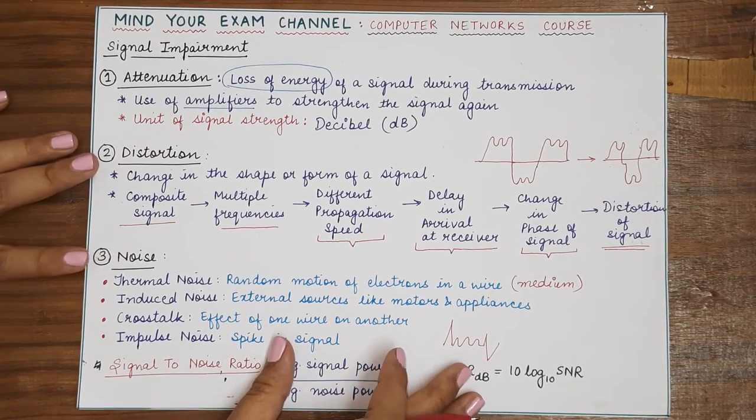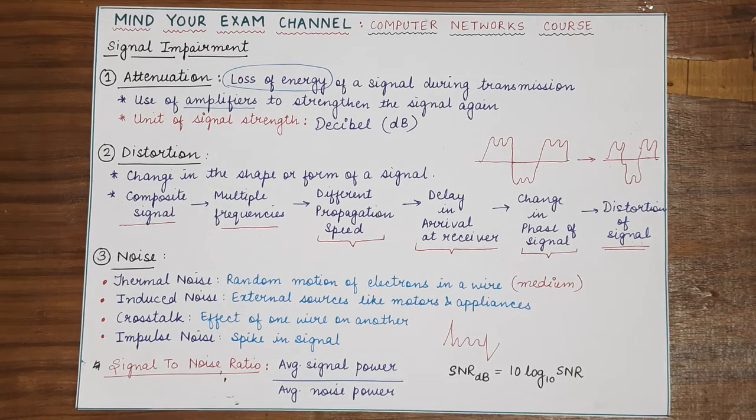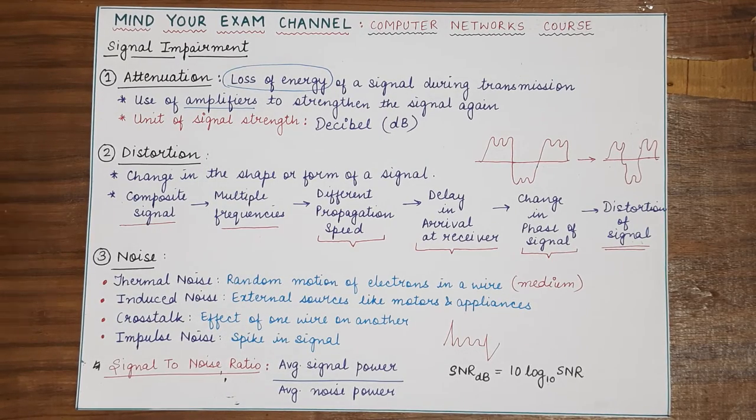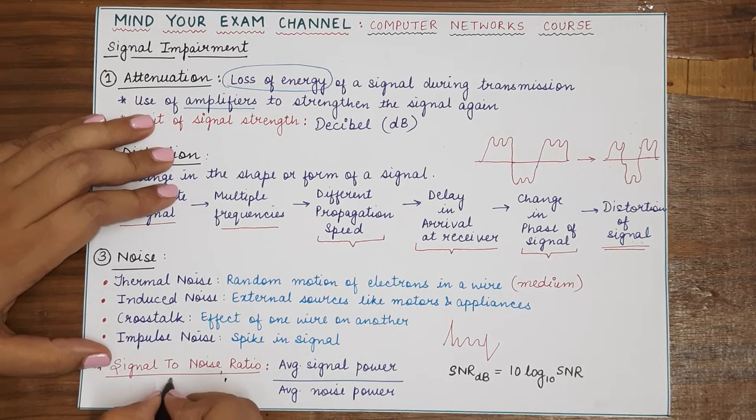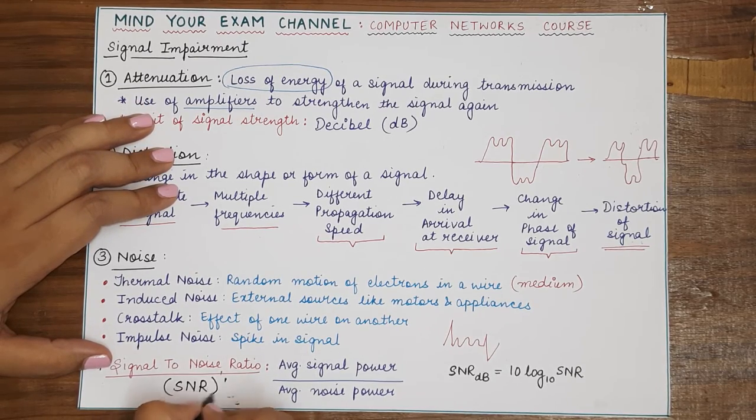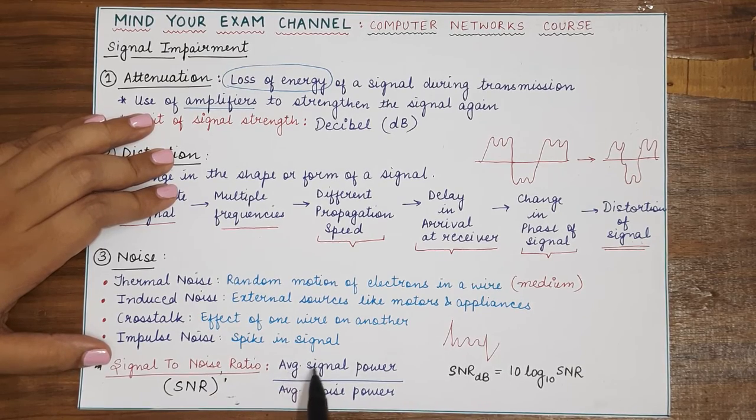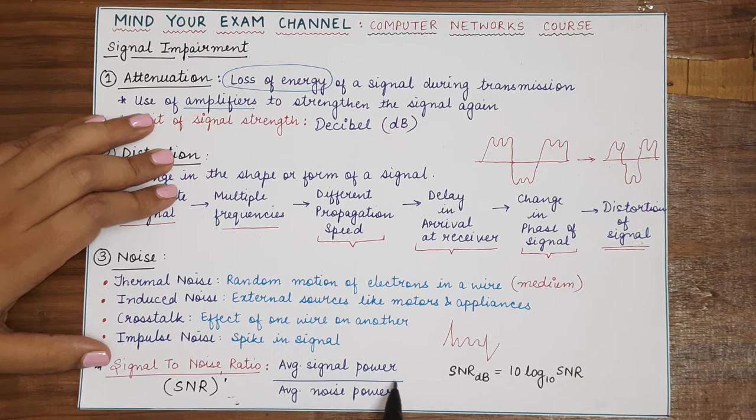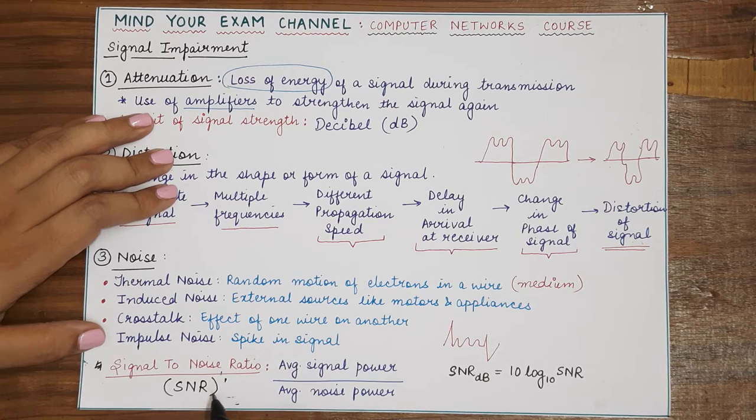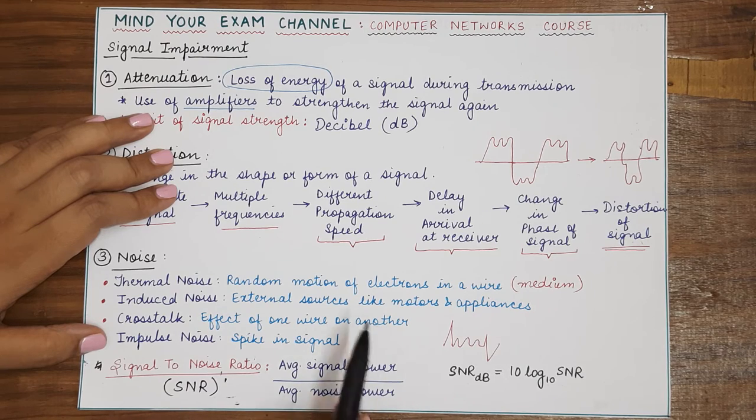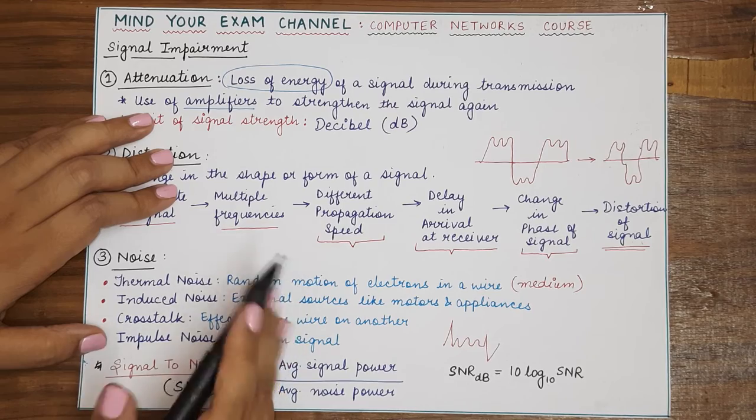Now, since we have studied noises and we have studied signals, we must know an important concept which is the signal to noise ratio which is also known as SNR. Now, signal to noise ratio is defined as the average signal power that means the strength of the signal divided by the average noise power that means how much strength is present in the noise. So, basically, if you have a high SNR that means your signal power is high and your noise power is low. So, a high SNR is actually desirable.